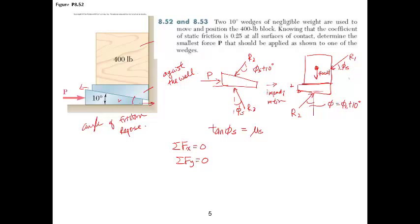So the first free body diagram, if I were to look at my coordinate system in x and y, I have minus R1 cosine phi_s. In this case, we actually do know what that angle is, 0.25. Plus R2 sin of phi_s plus 10, and that's equal to 0.